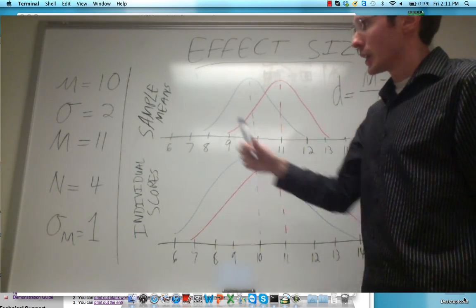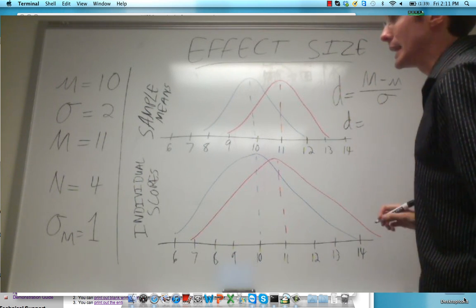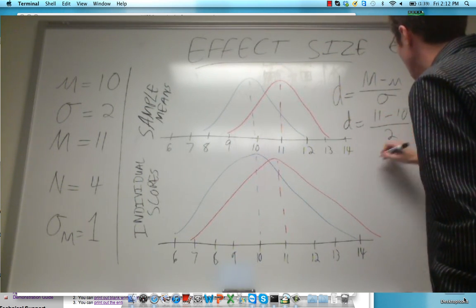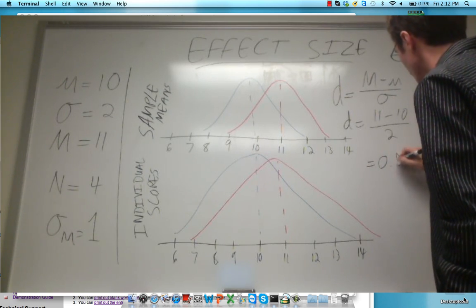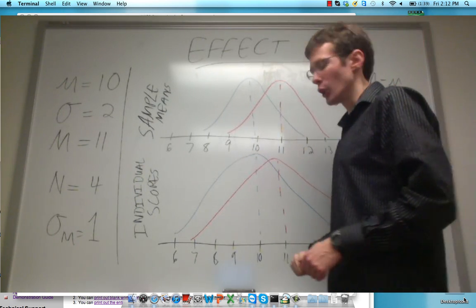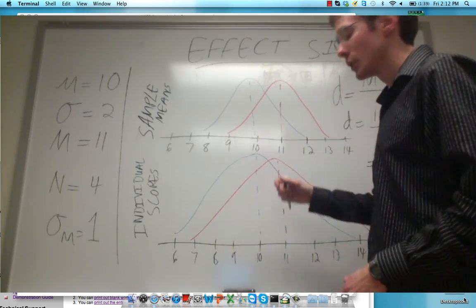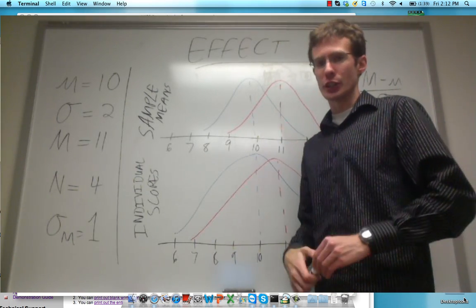In this case, I have my parameters over there. So d is going to equal 11 minus 10 divided by 2 or 0.5. In other words, my observed mean was 0.5 standard deviations away from the population mean.